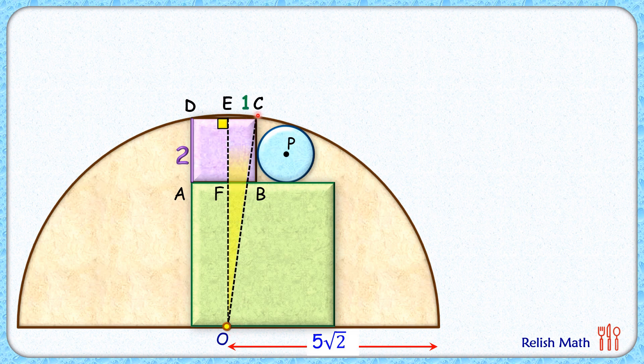Let's join OC here. Now in this right angle triangle OEC, OC is the radius of semicircle thus 5√2 cm. EF is 2 cm. Let's assume FO is h cm.